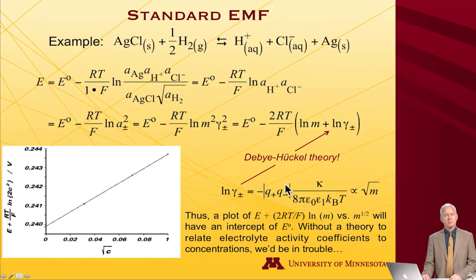And so here's how the experiment would actually be done. You would take E plus 2RT over F log M, so move this term over to the left hand side. You can measure the potential of your cell. You know what 2RT log molality over F is. And now you can plot that against the square root of the molality. And you ought to see if Debye-Hückel theory holds a straight line. And sure enough, as this becomes increasingly dilute, that's happening. And you can extrapolate that line all the way back to E0.